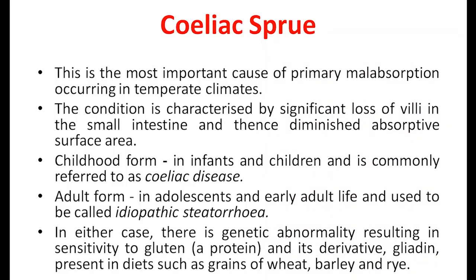Celiac sprue is characterized by significant loss of villi in the small intestine and diminished absorptive surface area. There are two forms: the childhood form, seen mainly in infants and children and commonly referred to as celiac disease, and the adult form occurring in adolescence and early adult life, previously called idiopathic steatorrhea — referring to the passage of fat in the stool.